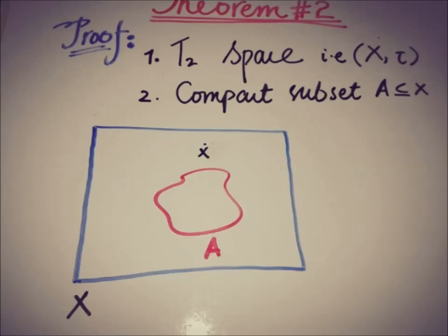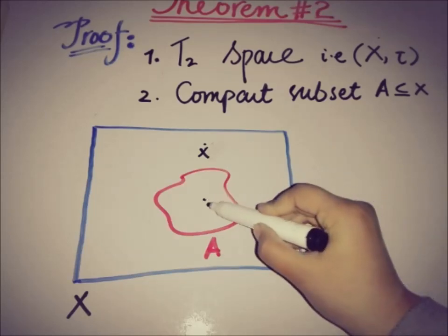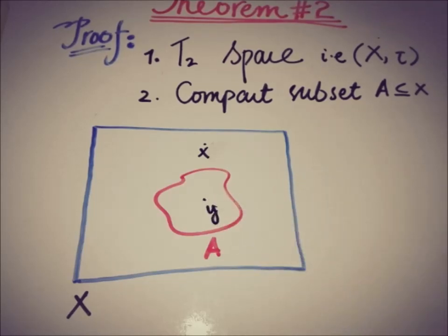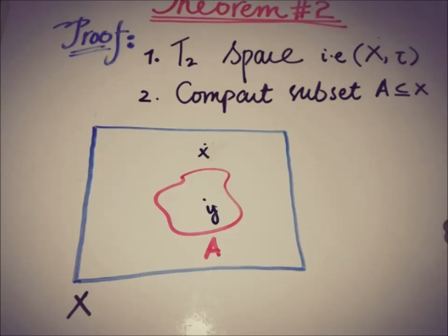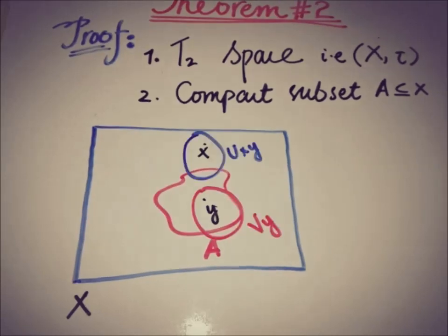The point x is in A-complement, and we also pick a point y from the set A. Because X is a Hausdorff space, there must be two disjoint open sets, one containing x and one containing y.